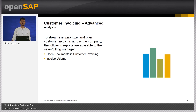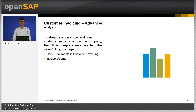SAP Business by Design also offers integrated analytics in the customer invoicing area so that you can find out how well your billing department is working on generating invoices. One of the most important reports for a billing executive is the invoice volume report. The invoice volume report shows the value, the quantity of invoices, credit memos and correction invoices in the status released and release canceled.